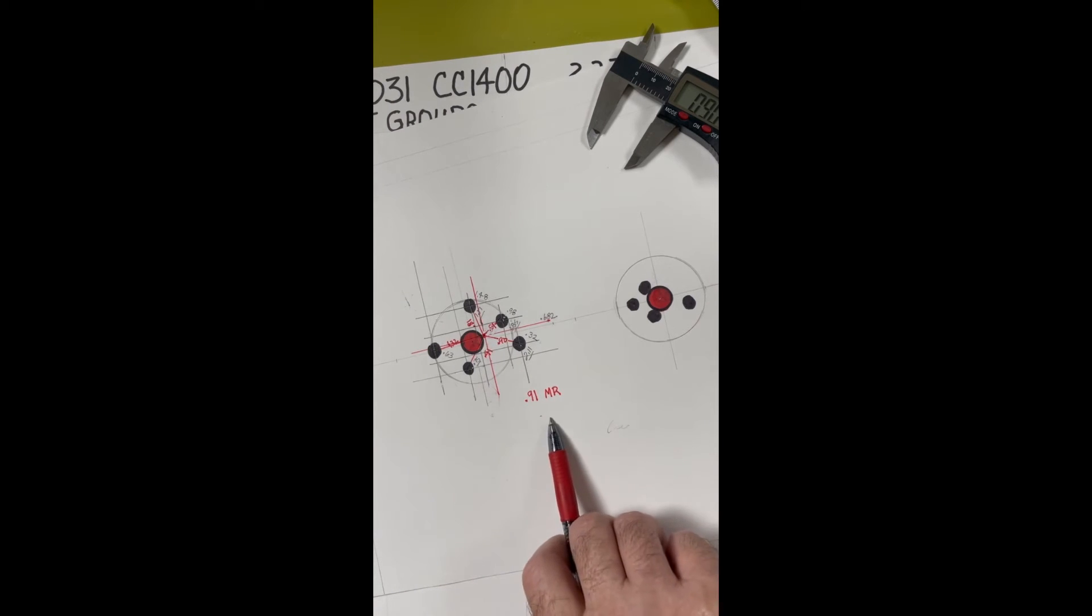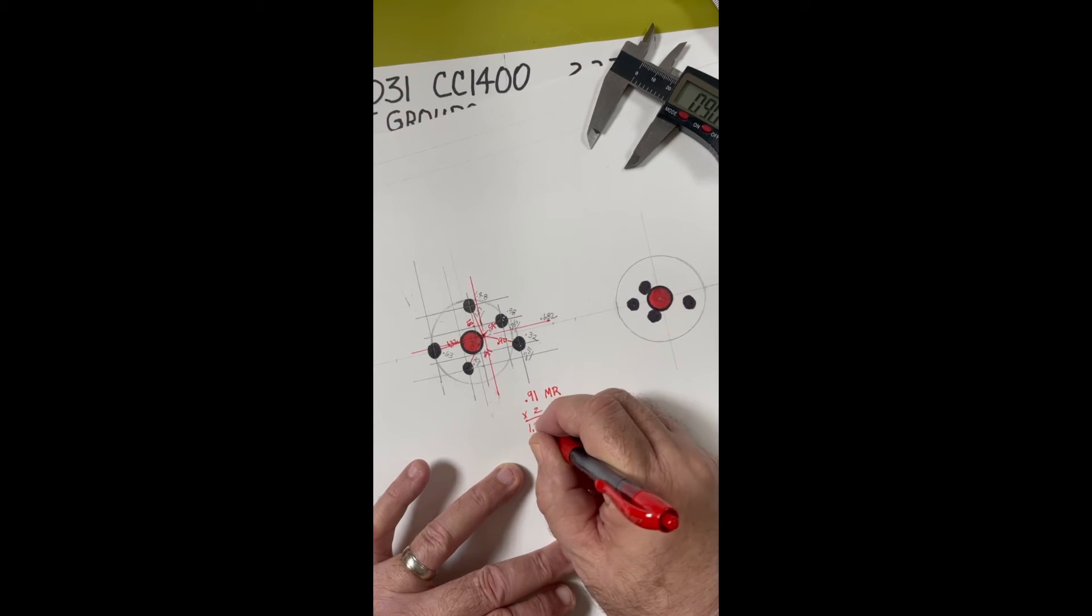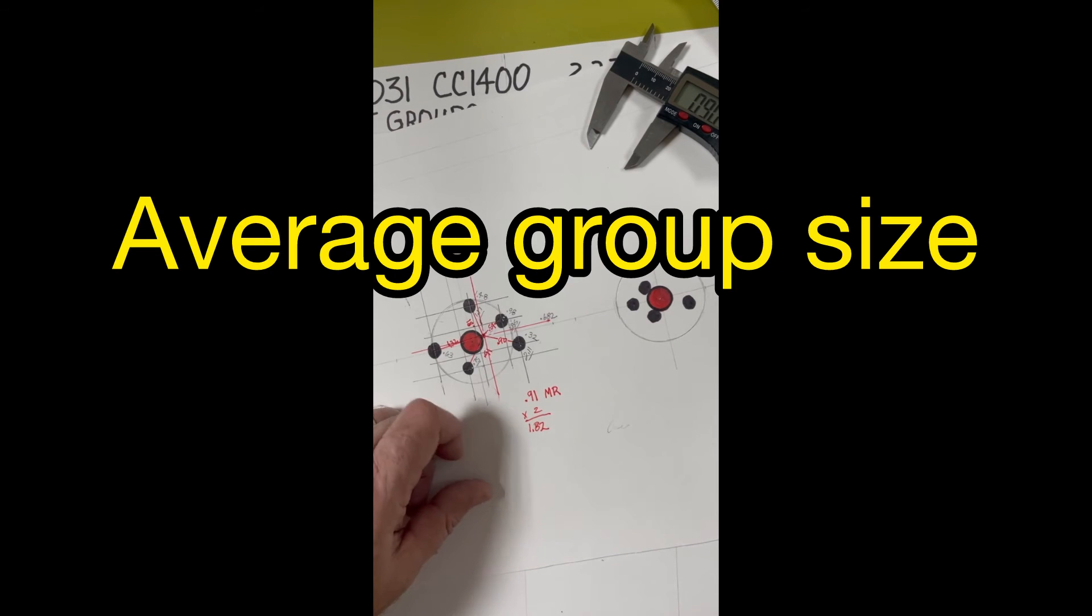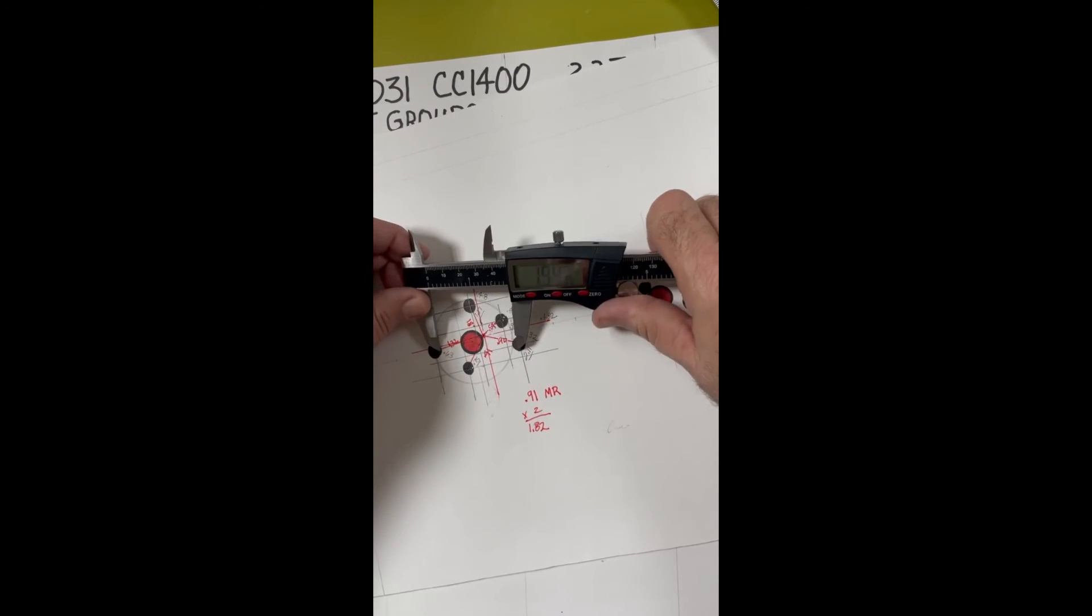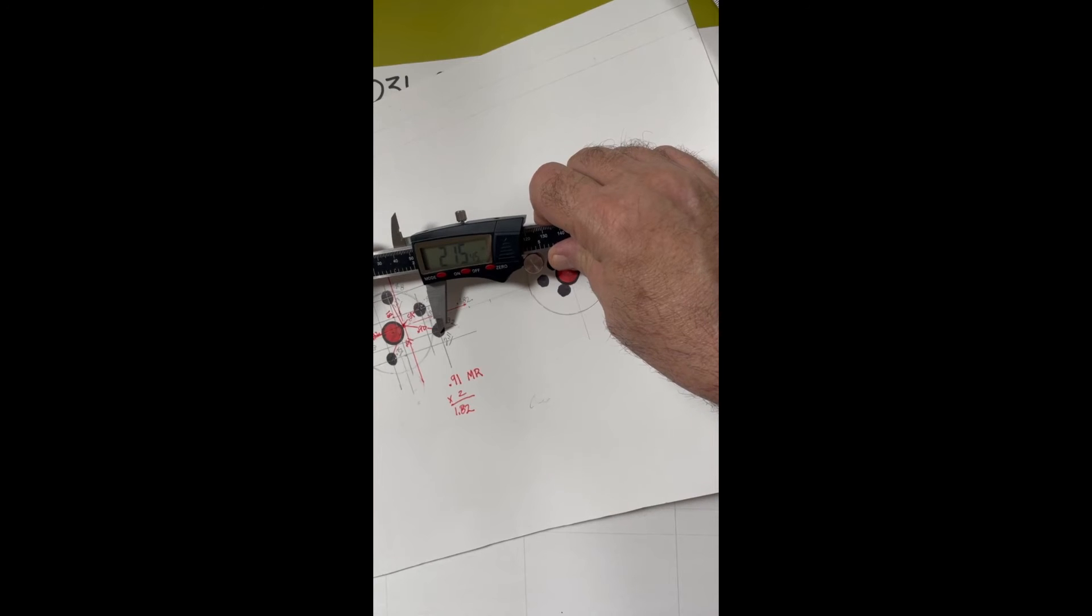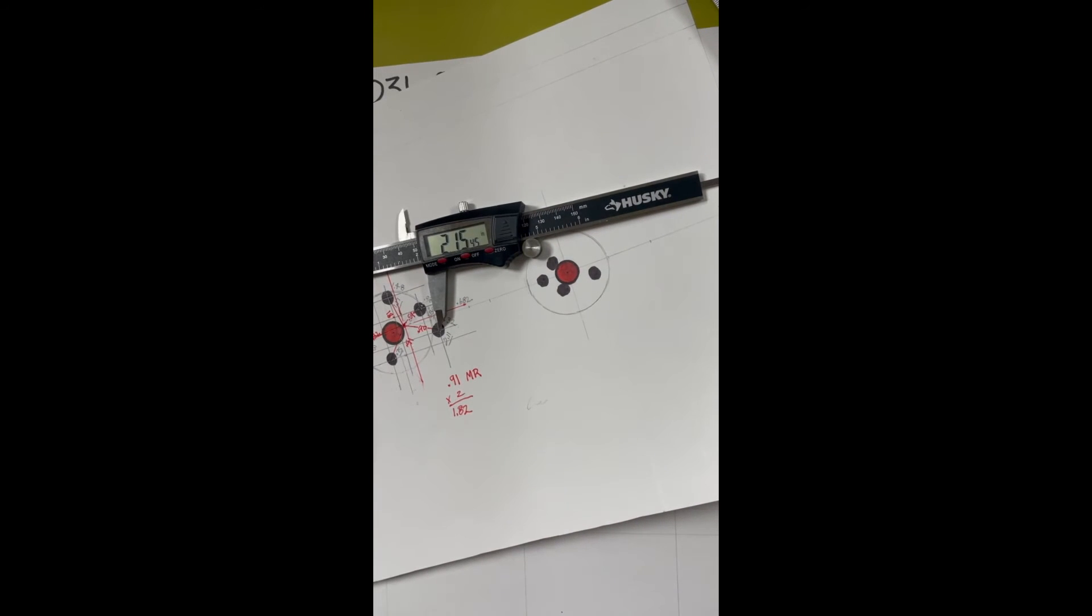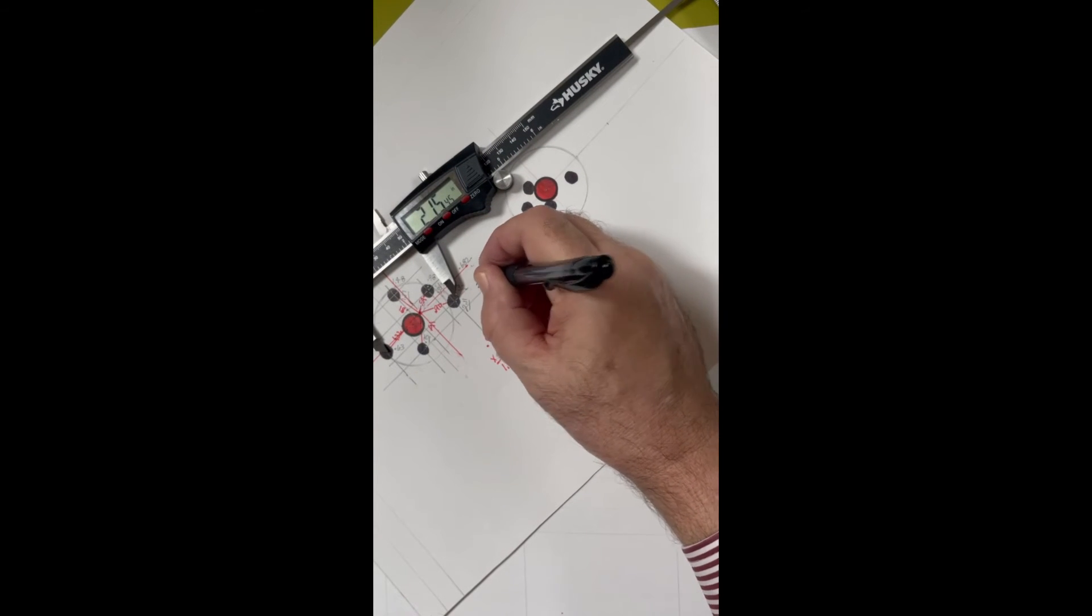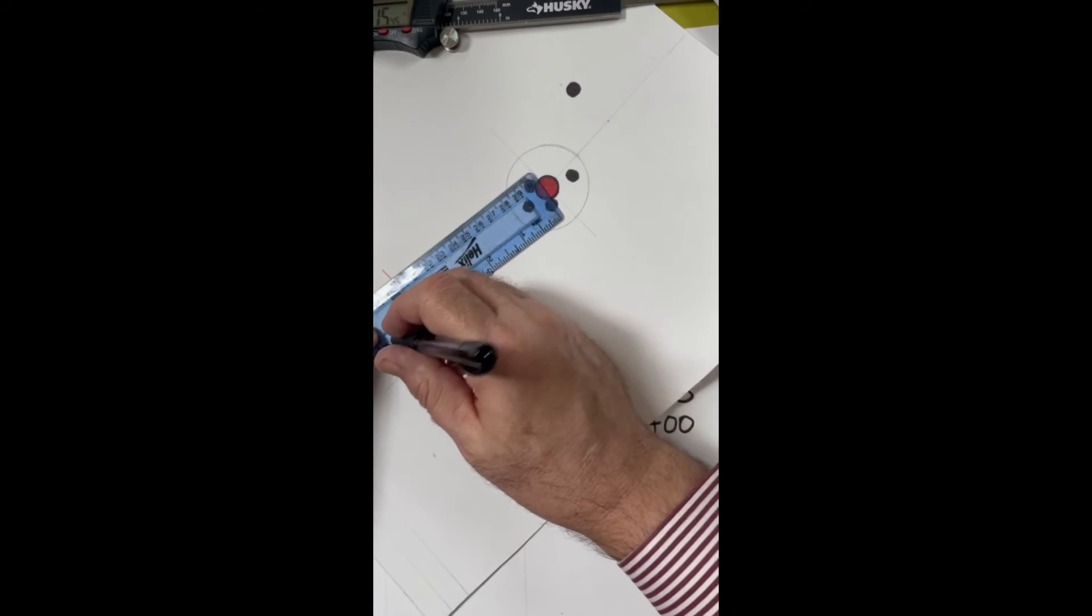With a 0.91 mean radius, if you double that because a radius is half of a circle, you get 1.82, so your average distance at 200 yards would be 1.82, your average group size. But here, your extreme spread from here to here, you have an extreme spread of 2.15. So, I'm going to take a black pen and say that's 2.15 from here to here.